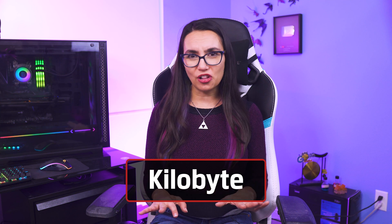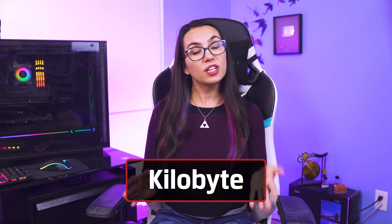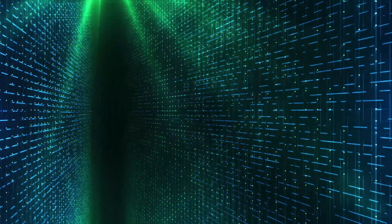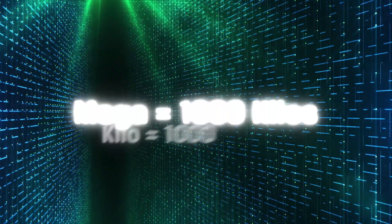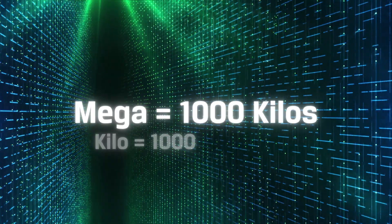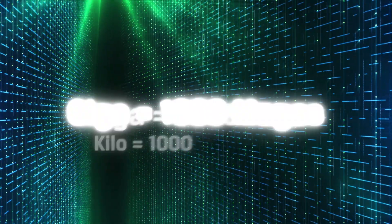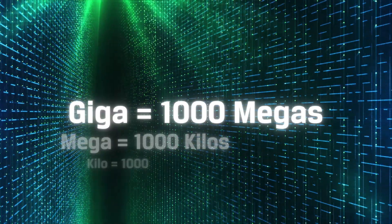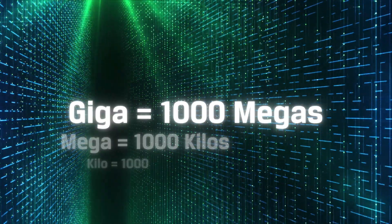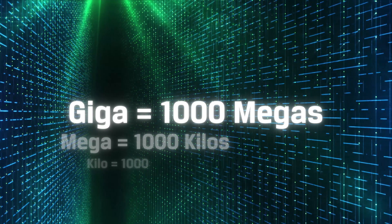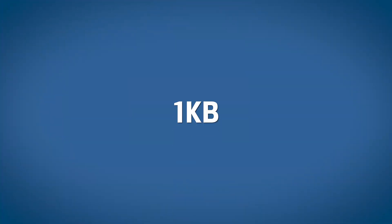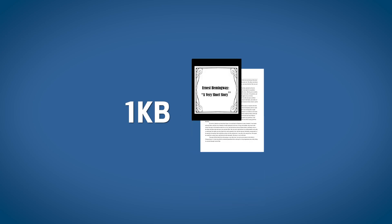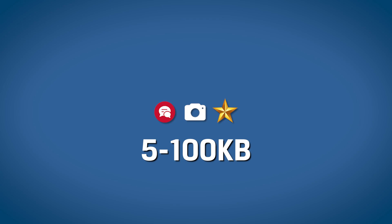That's the most confusing part of all of this. Once we acknowledge that, the prefixes mean just what you would think: kilo is 1,000; mega is 1,000 — technically 1,024 of those; giga is 1,000, but technically 1,024 of those; and so on. To put it in perspective, 1 kilobyte (KB) is roughly one very short story. Graphics of small websites may range from 5 to 100 kilobytes.